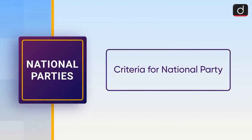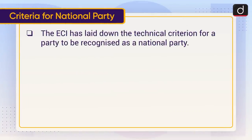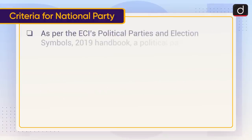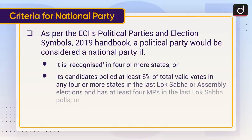Now let's discuss the criteria for a national party. The ECI has laid down the technical criterion for a party to be recognized as a national party. A party may gain or lose national party status from time to time depending on the fulfillment of these conditions. As per the ECI's Political Parties and Election Symbols 2019 handbook, a political party would be considered a national party if it is recognized in four or more states.